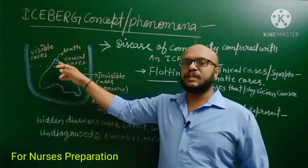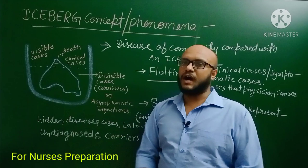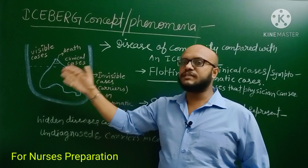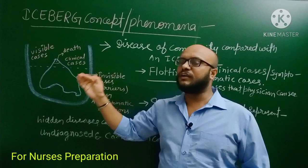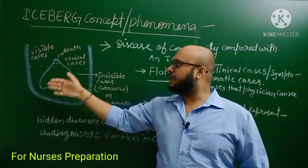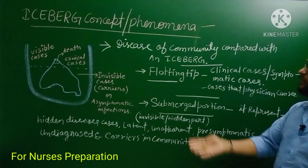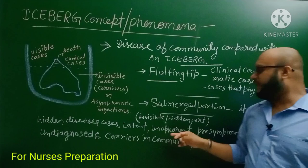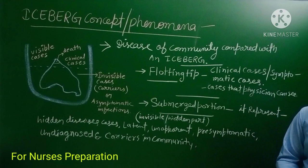Diagnosed cases are represented by the tip of the iceberg; they are very small in number. Undiagnosed, asymptomatic, or latent cases that a physician is not able to detect or see are represented by the large submerged portion of the iceberg. The submerged part shows hidden disease cases: latent, inapparent, pre-symptomatic, undiagnosed, and carrier disease cases in the community.